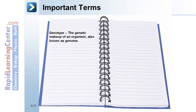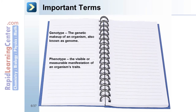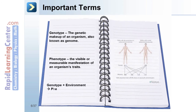Genotype refers to the genetic makeup of an organism, also known as the genome. Phenotype is the visible or measurable manifestation of an organism's traits. Genotype plus environment yields phenotype.